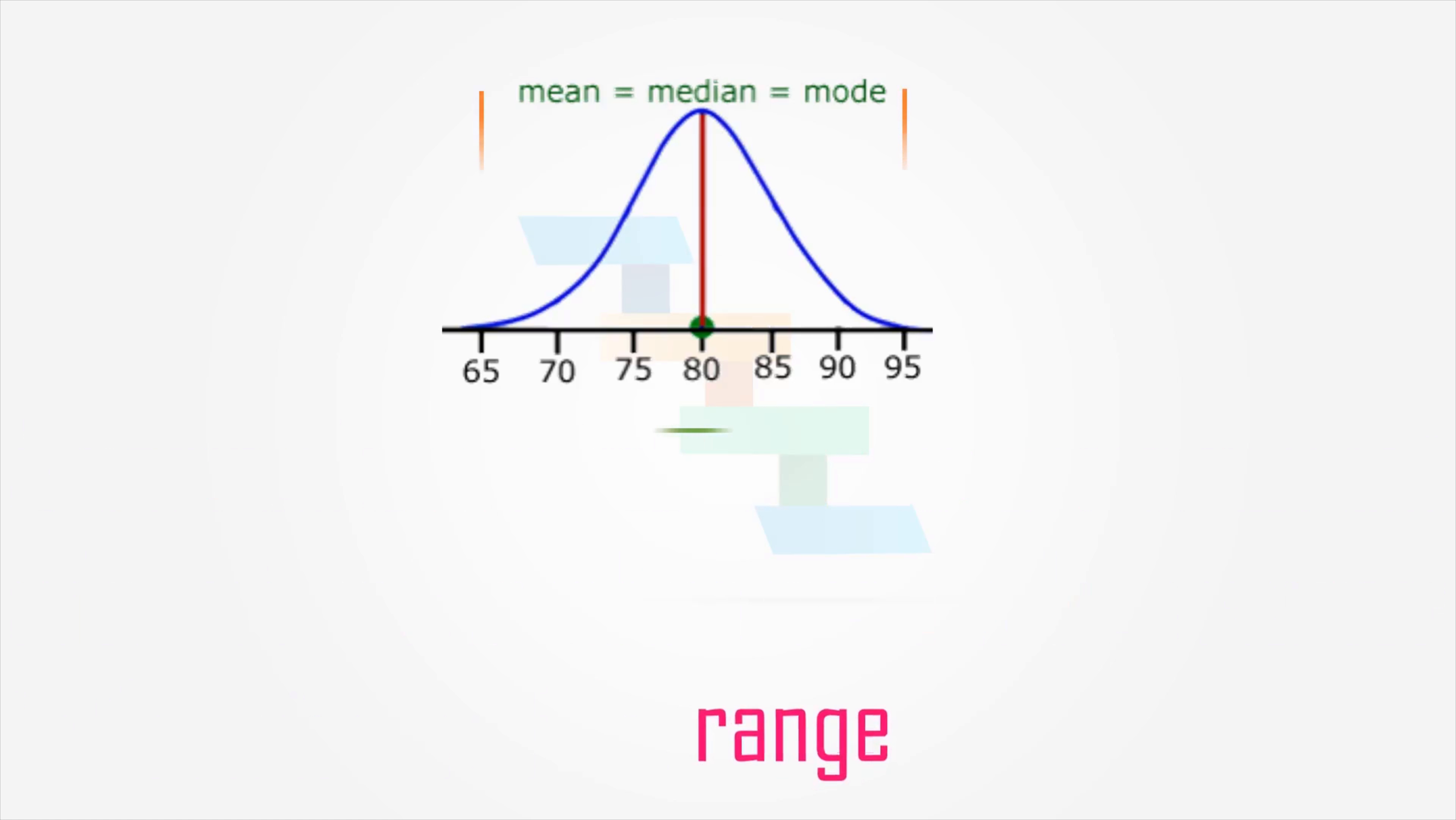Here, range refers to the difference between the largest and the smallest value. That means, range of a set of data is the difference between the largest and the smallest value. Here, the largest value is 95 and the smallest value is 65. So, the range is 95 minus 65 which is 30.